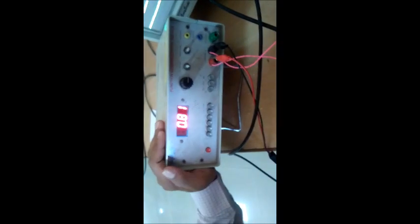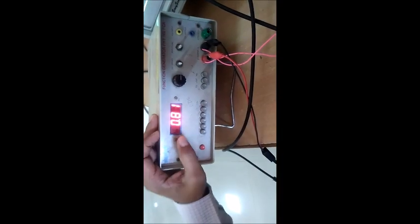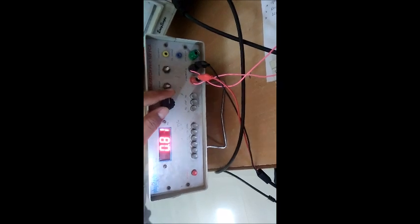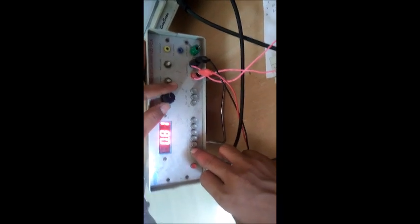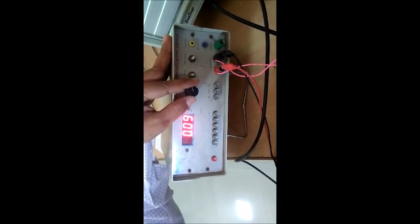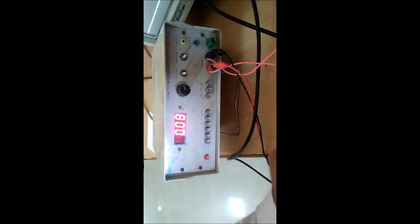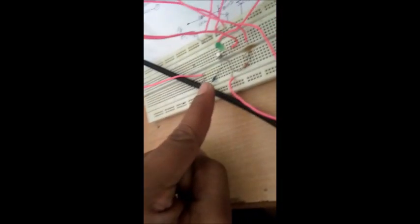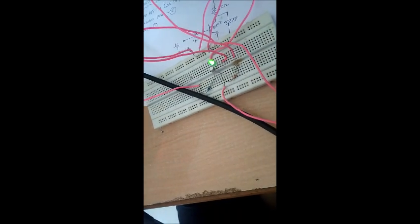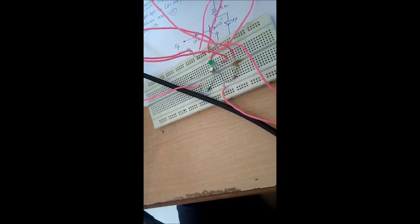To see the switching action of the transistor, reduce the frequency at the input side to 1 Hertz. Now observe the LED - the LED is on and off based on the time period.